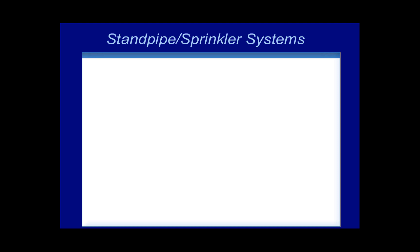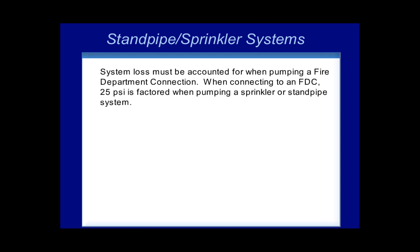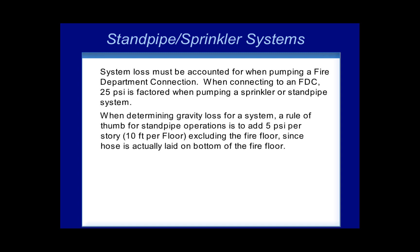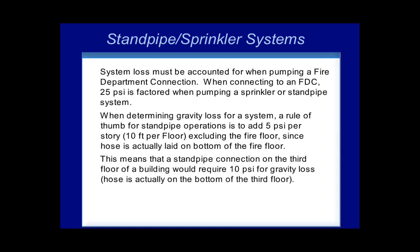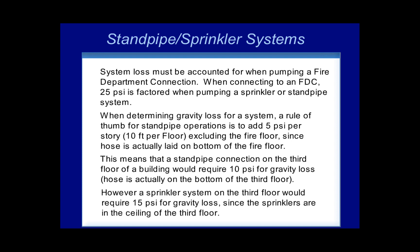Standpipe and sprinkler systems. System loss must be accounted for when pumping a fire department connection. When connecting to an FDC, 25 PSI is factored when pumping a sprinkler or standpipe system. A rule of thumb for standpipe operations is to add 5 PSI per story for 10 feet per floor, excluding the fire floor, since hose is actually laid on the bottom of the fire floor. A standpipe connection on the third floor would require 10 PSI for gravity loss. However, a sprinkler system on the third floor would require 15 PSI for gravity loss, since the sprinklers are on the ceiling of the third floor.